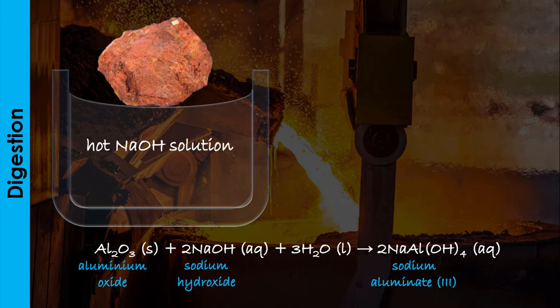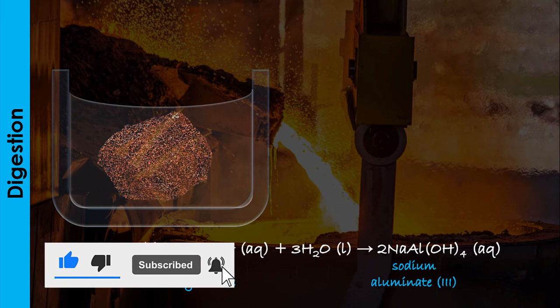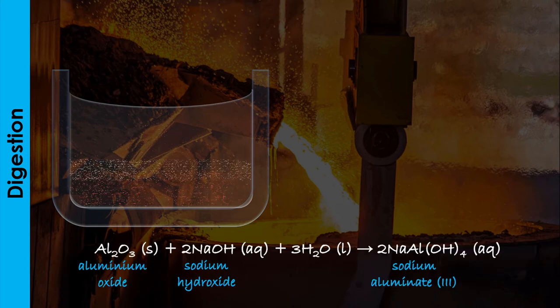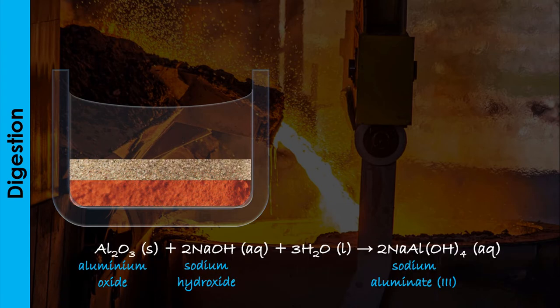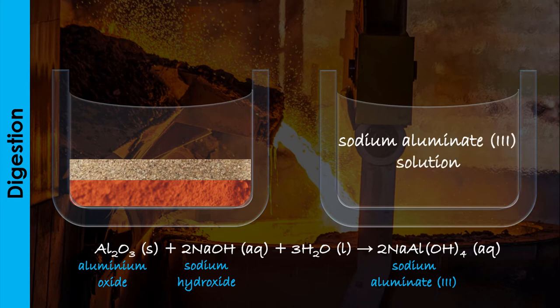The aluminium oxide, being amphoteric, dissolves in the alkali while the iron(III) oxide and silicon(IV) oxide do not dissolve and are filtered out from the mixture as a sludge. The iron(III) oxide is a basic oxide and cannot react with an alkali, while the silicon(IV) oxide is insoluble in sodium hydroxide solution.